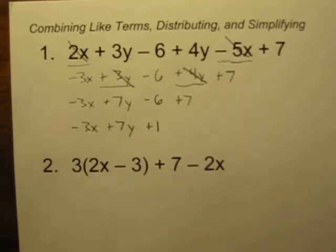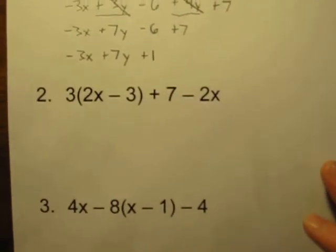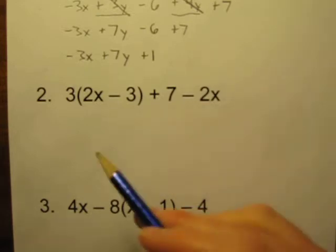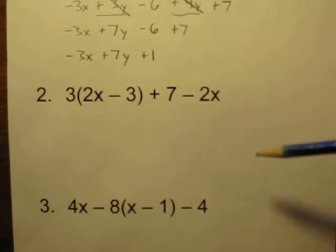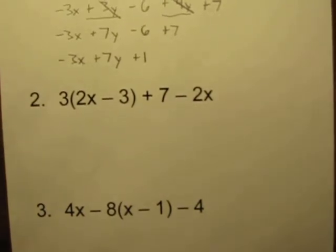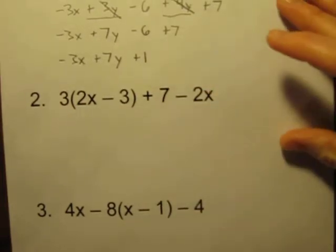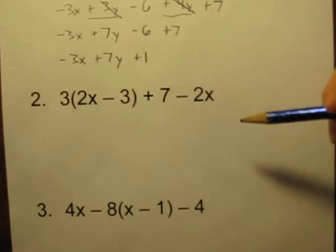And the next problem here. Now it's a little bit trickier. Now they throw in the parentheses. So now we're going to distribute and we're going to combine like terms. First thing we want to do is notice there's still no equal sign. We still can't solve it. All we can do is try to make it look a little cleaner and neater. Let's start by getting rid of those parentheses.